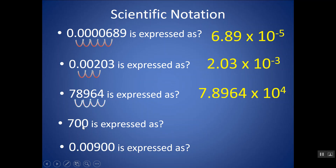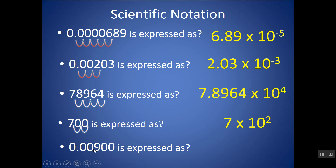This next number will have a positive exponent. Put a decimal at the end and move it until we get a number between 1 and 9.99. Moving it two places gives us 7 times 10 to the 2. I'm not putting those zeros at the end because they're insignificant — there was no decimal. But if there was a decimal, like 700.0, then I would keep those zeros in my coefficient. The small number gets a negative exponent — moving the decimal 3 places gives 9.00 times 10 to the negative 3, keeping those zeros because they are significant.